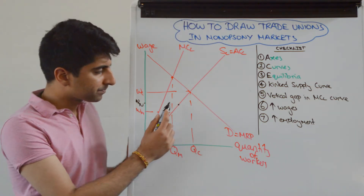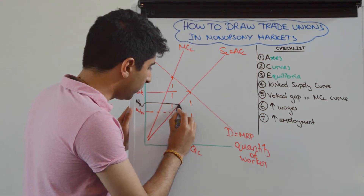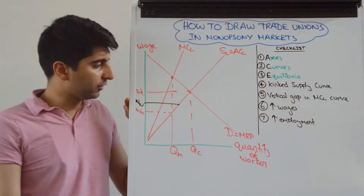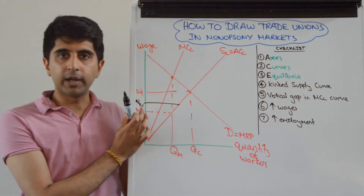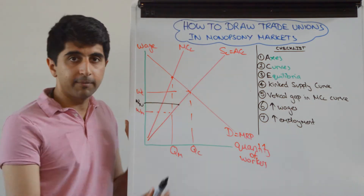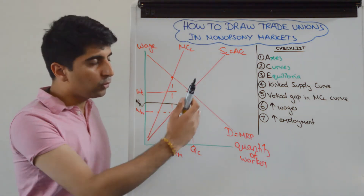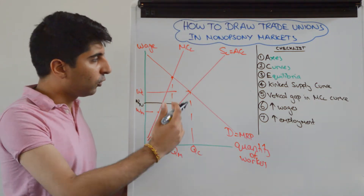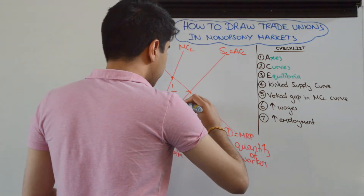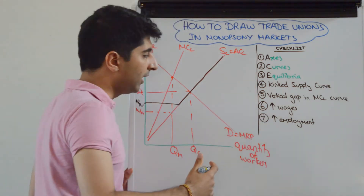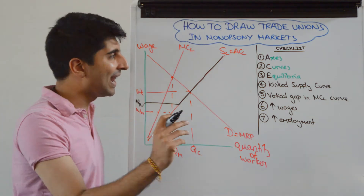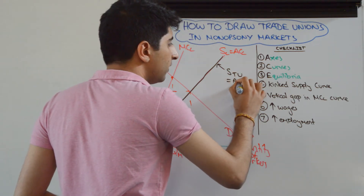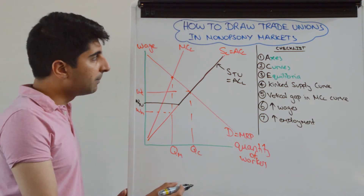At the trade union wage rate, the supply curve is now going to be horizontal up until that limit — this is the new labour supply curve, the average cost curve, and the marginal cost curve up until this point. All workers are only willing to work at WTU, so the supply curve becomes horizontal up to this point. Beyond this point, the supply curve reverts back to the original. Label this supply trade union, equal to the average cost of labour — that's what tells the examiner what you're doing.